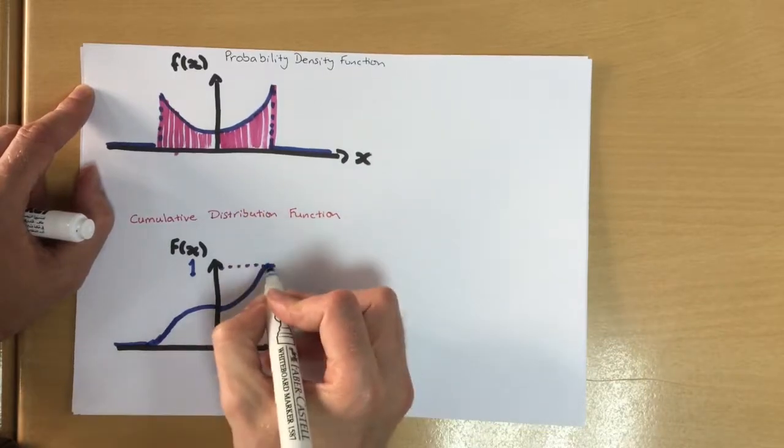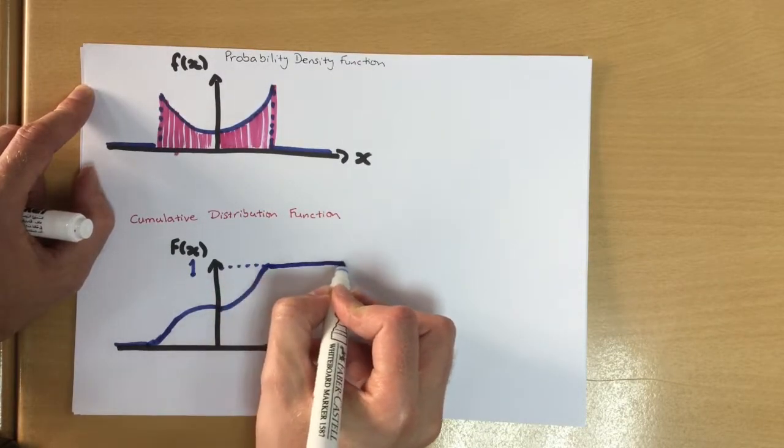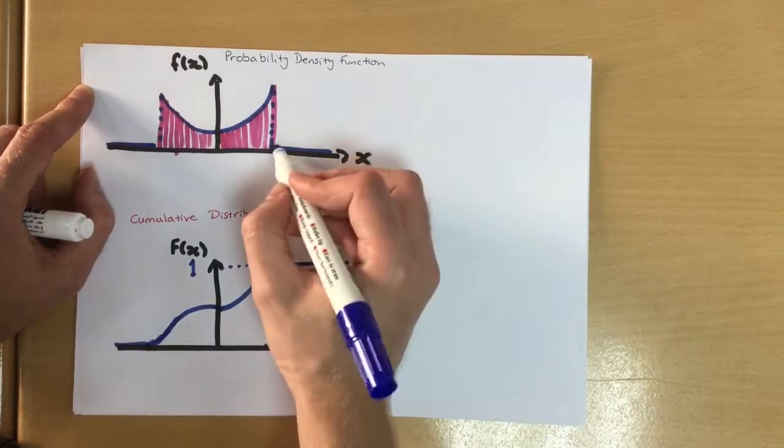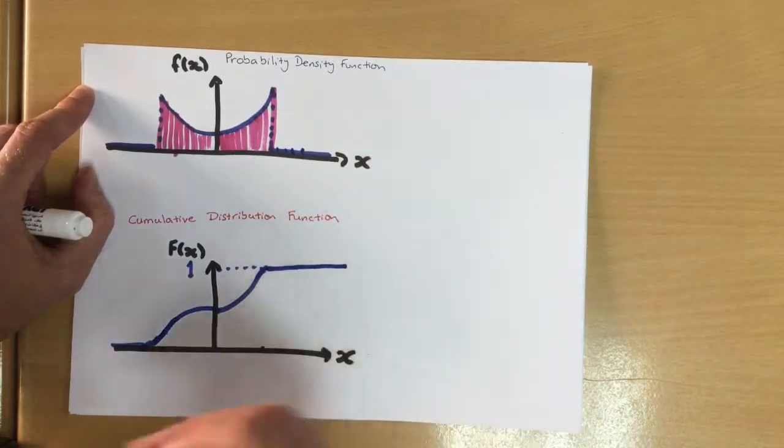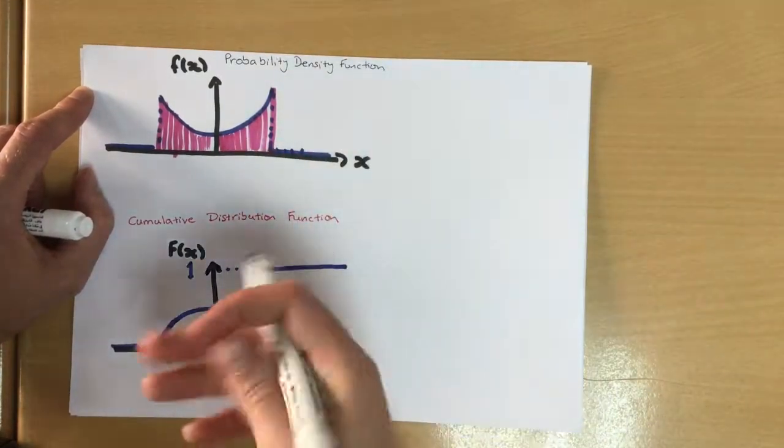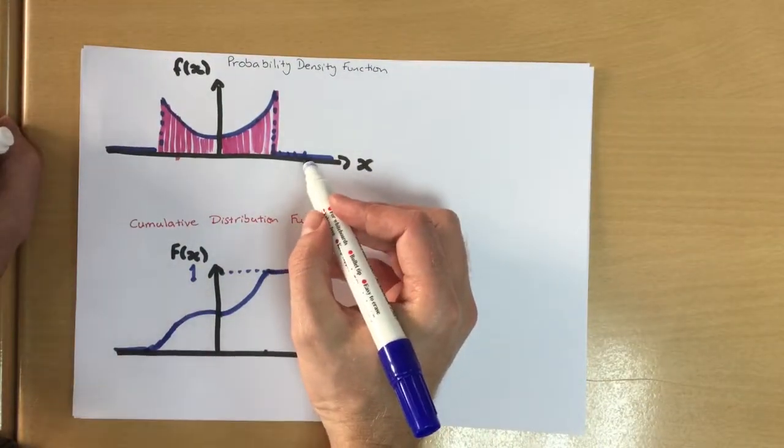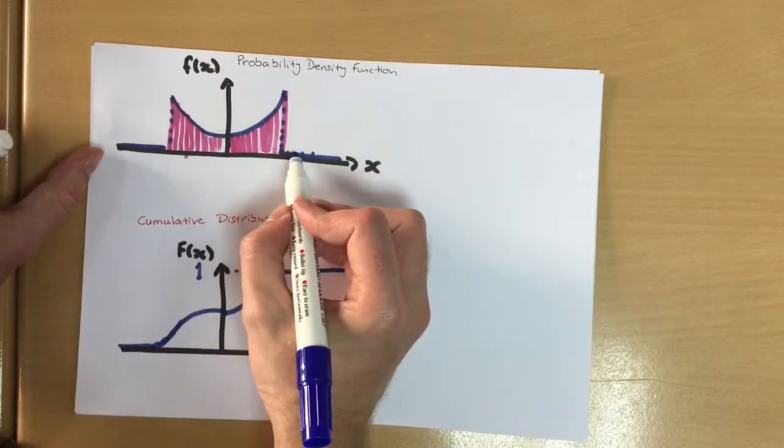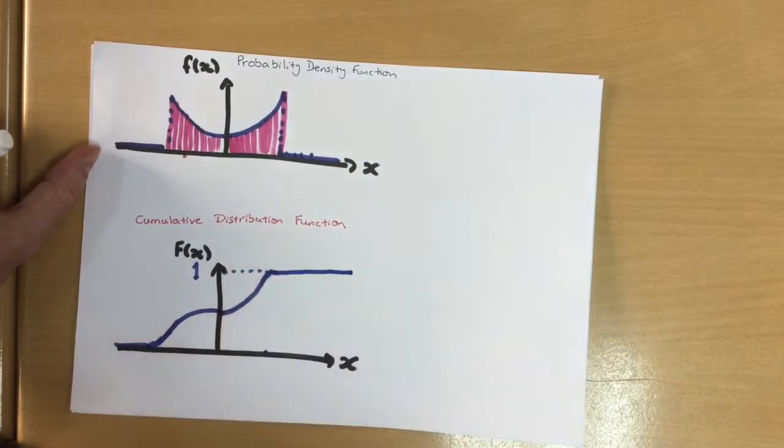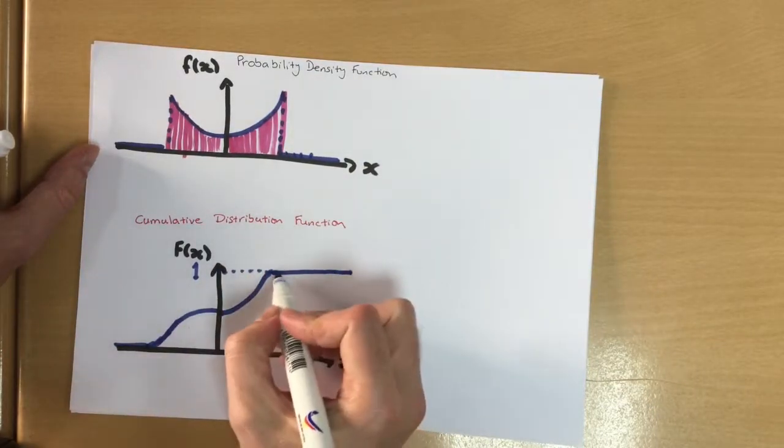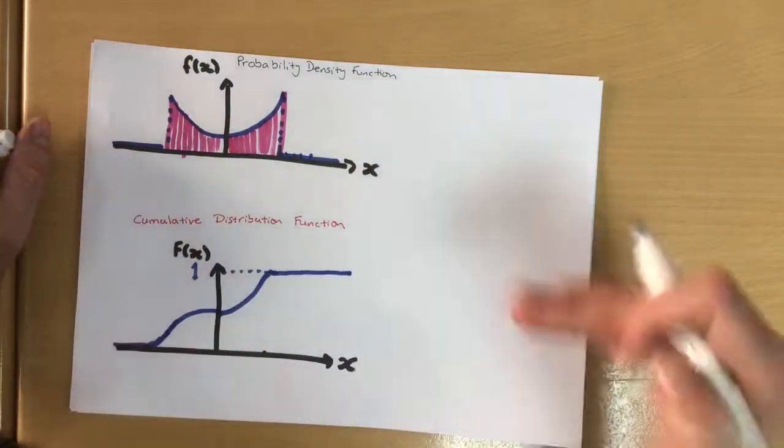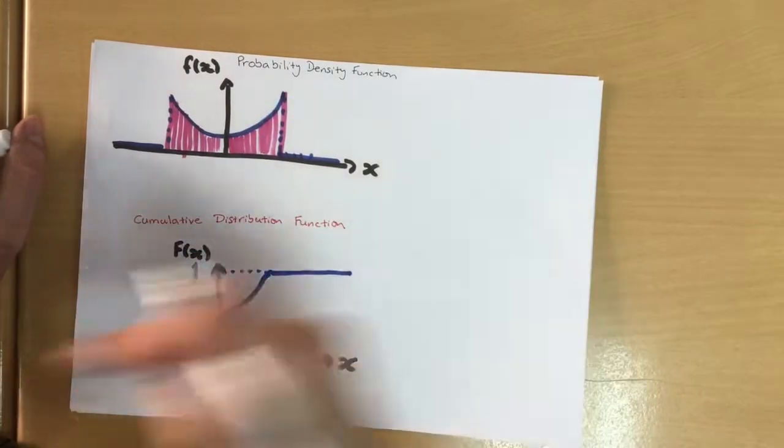At this point, our graph will then go totally horizontal. Because all these points here are adding absolutely nothing. There's nothing else here to add on to this going forwards. So we reach a maximum of one, and it kind of goes horizontal at that point, straight across, like that.